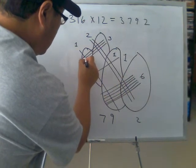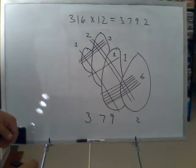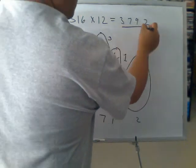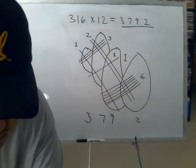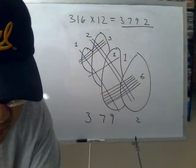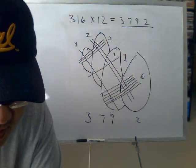And the last digit is one, two, three, which is 3,792. Which is the exact same answer that I have calculated using a calculator. So this ends my presentation for the Japanese multiplication method using diagonal lines.